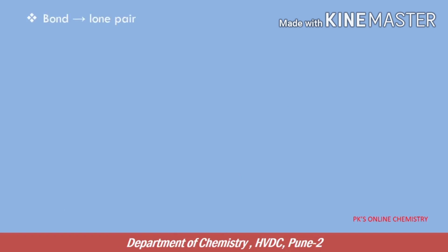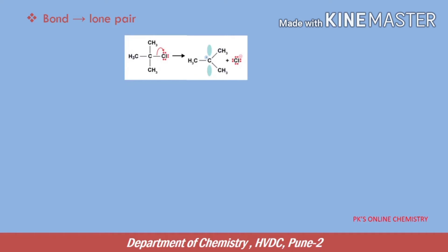Let us see bond-to-lone-pair movement of electrons — how electrons from a covalent bond move to form a lone pair. For example, tertiary butyl chloride is converted into the corresponding carbocation and a chloride ion. This is an example of heterolysis. In this example, the tail of the curly arrow begins at the bonding pair, and the head of the curved arrow is at the chlorine atom, where it will form a lone pair.